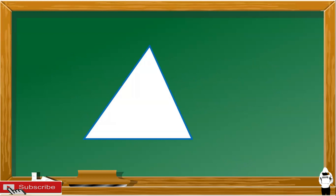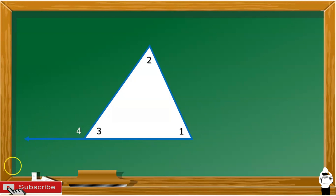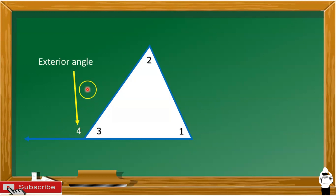Let's consider this triangle. This triangle has three angles. These three angles, we call them the interior angles. And if we extend this line, it forms another angle. Let's call this angle as angle 4, and this angle 4 we call the exterior angle.